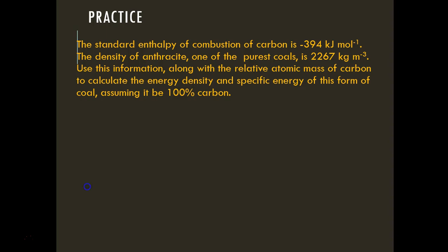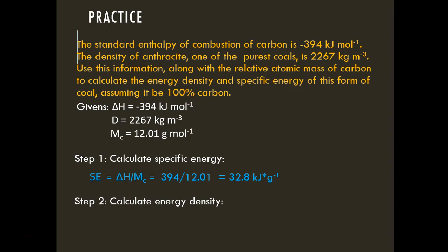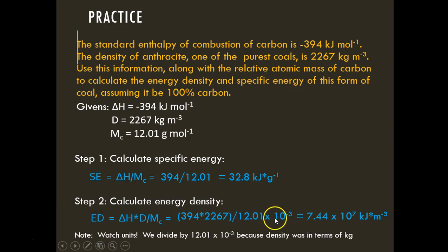The problem gives us a delta H value, a density, and the molar mass of carbon (12.01 g/mol). For specific energy, we divide the delta H by the molar mass, giving 32.8 kJ/g. For energy density, we multiply the delta H by the density and divide by the molar mass. Since density is in kg/m³, the molar mass must be expressed as 12.01 × 10⁻³ kg/mol, giving an energy density of 7.44 × 10⁷ kJ/m³.